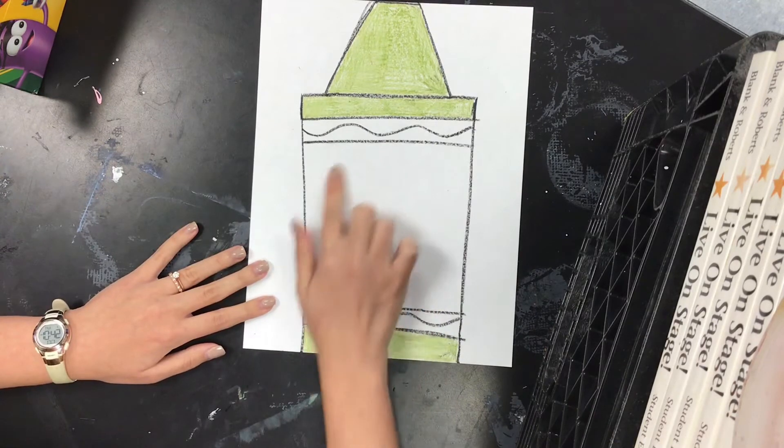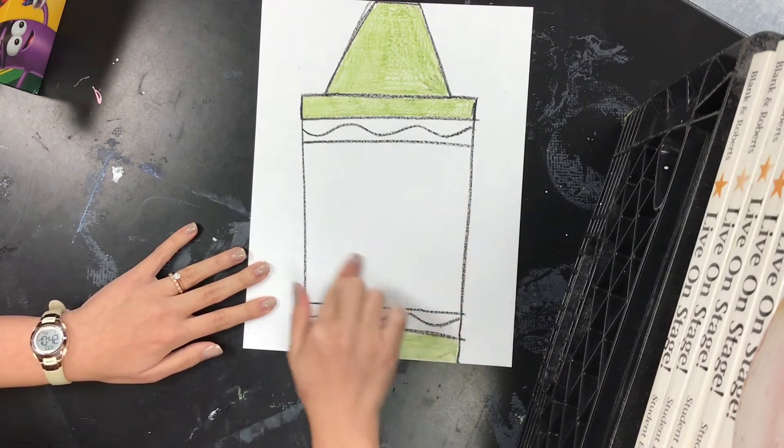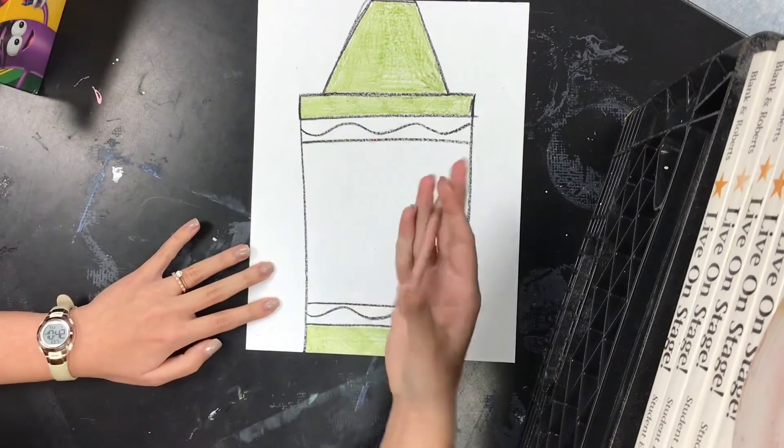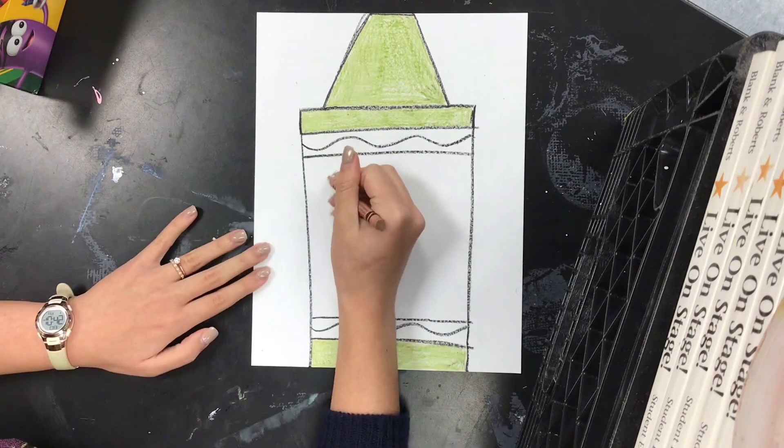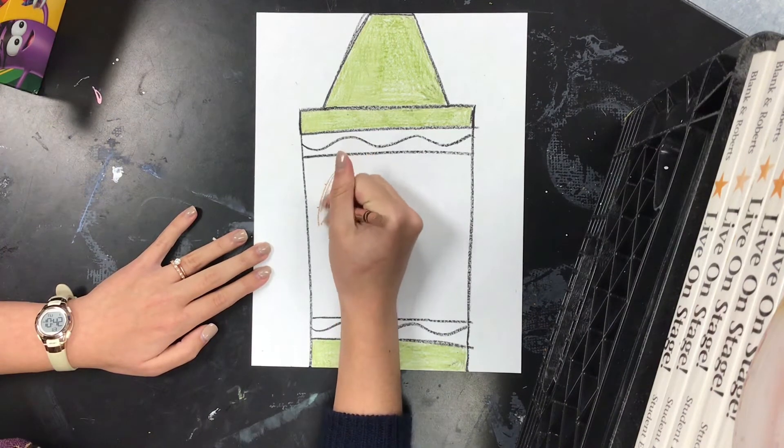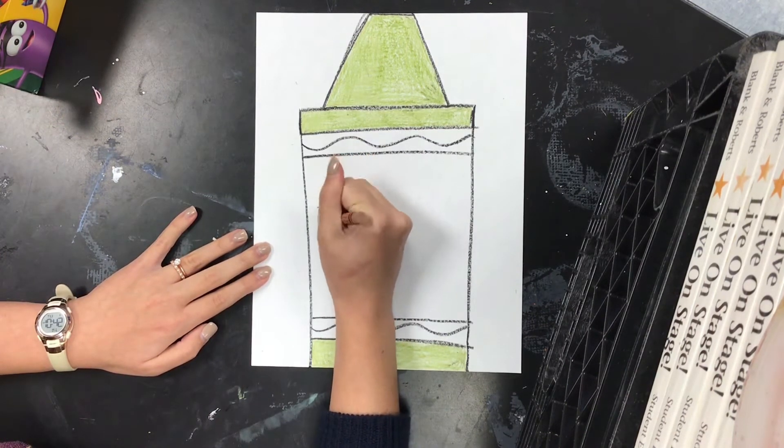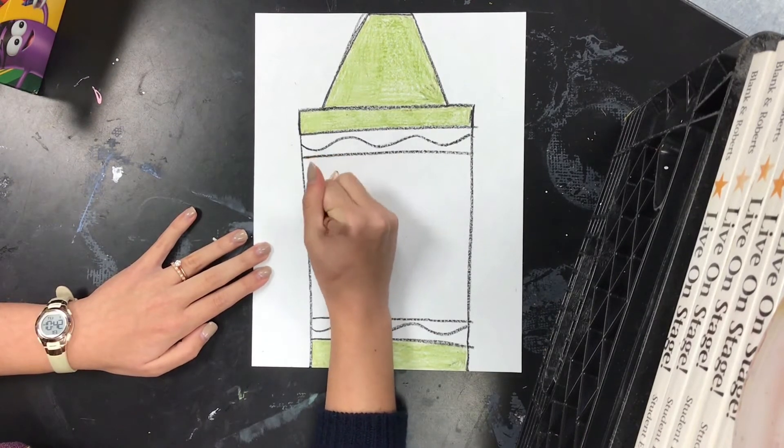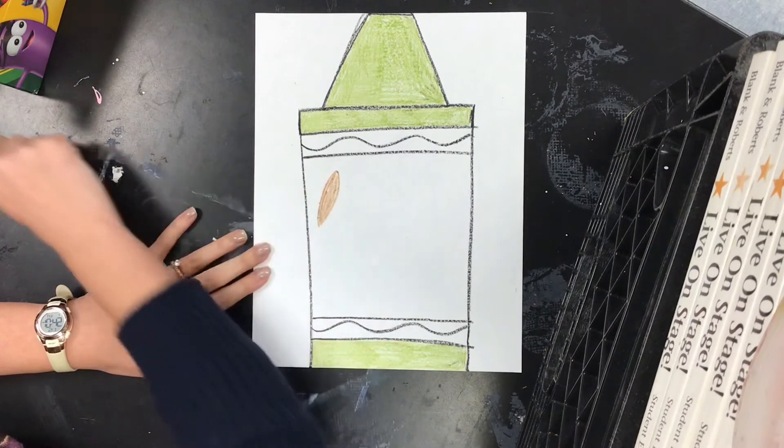Once you have your top and bottom of your crayon, we've left that middle part blank. We're going to fill this with things that are all about you. So I'm going to start by drawing a paintbrush because when it comes to art, my favorite type of art is painting.